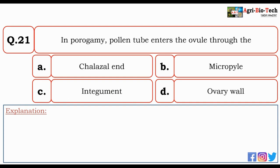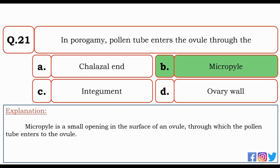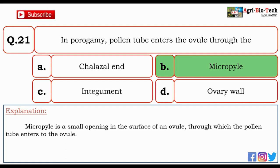Next question: in porogamy, the pollen tube enters the ovule through — chalazal end, micropyle, integument, or ovary wall? The correct option is B — micropyle. Micropyle is a small opening in the surface of an ovule through which the pollen tube enters the ovule.